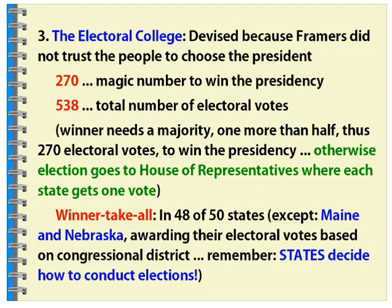The Electoral College — I have a separate video on that, five things to know about the Electoral College, so please check that out on Classroom and YouTube. The Electoral College magic number is 270. This is one more than half of the total number of electoral votes, which is 538. If you divide 538 by two, you get 269 — one more than that is majority, which is 270.